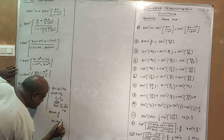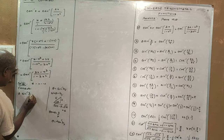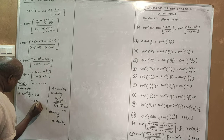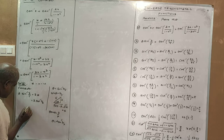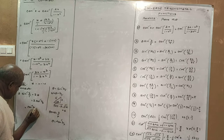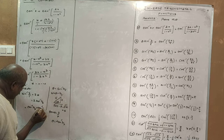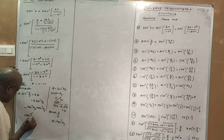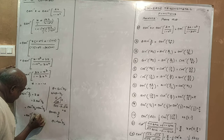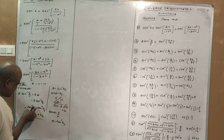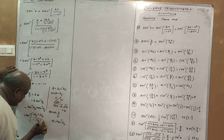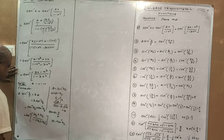So theta equals tan inverse 3 by 4. Therefore 2 into sin inverse 3 by 5 equals 2 into theta, which equals 2 into tan inverse 3 by 4. Applying the double angle formula: tan inverse 3 by 4 plus tan inverse 3 by 4, using tan inverse x plus tan inverse y formula, gives 3 by 4 plus 3 by 4 over 1 minus 3 by 4 into 3 by 4.